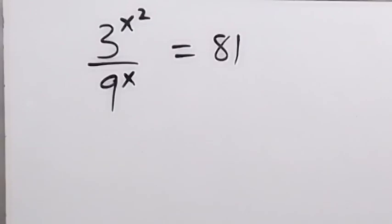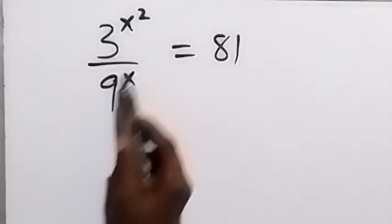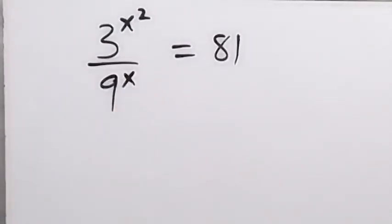Hello, you are welcome. How to solve this problem: 3 raised to power x squared divided by 9 raised to power x equals to 81.